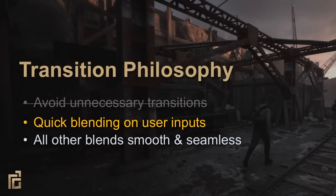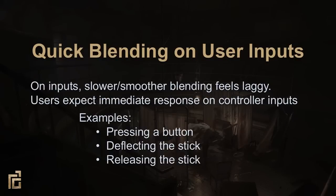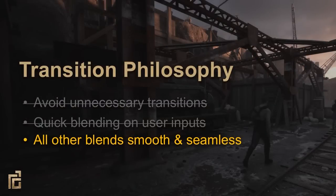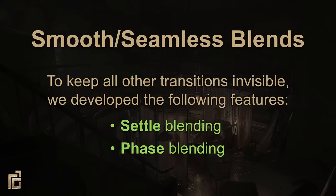Now let's talk about quick blending. Simple, fast blending still has an important place in games. On inputs like hitting a button, deflecting or releasing the stick, the user expects immediate feedback, so a quick blend in this circumstance feels appropriate. All other blends should be smooth and seamless. Ideally, transitions that aren't triggered by the player should be so transparent that the player doesn't even know it happened. This goal led us to develop two important blending features: transitioning into an idle uses settle blending, and transitioning into movement uses phase blending.